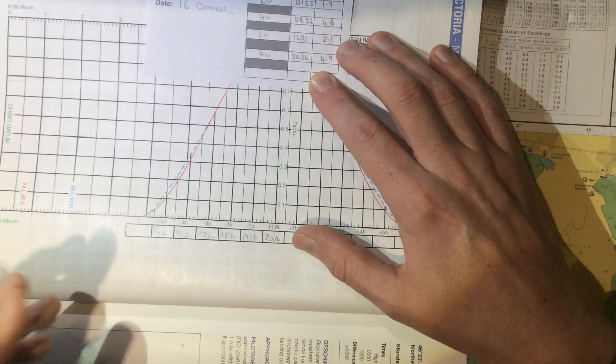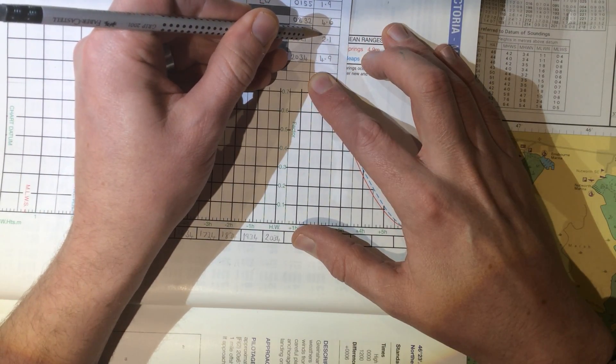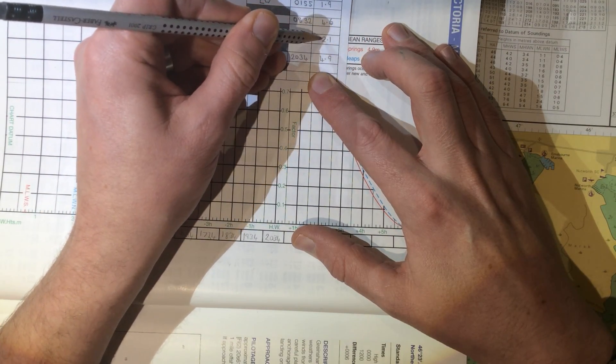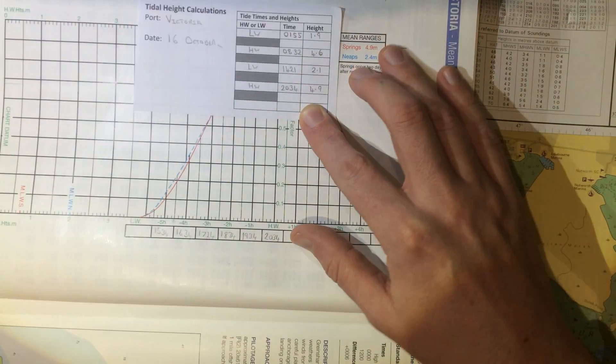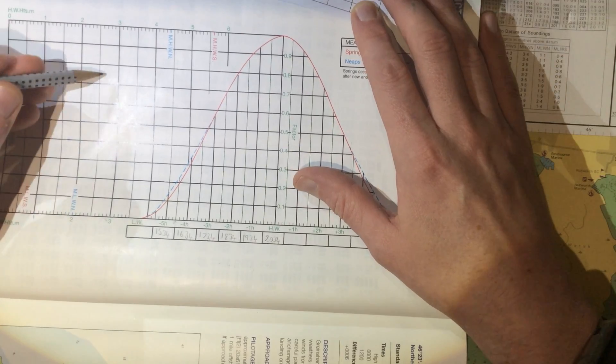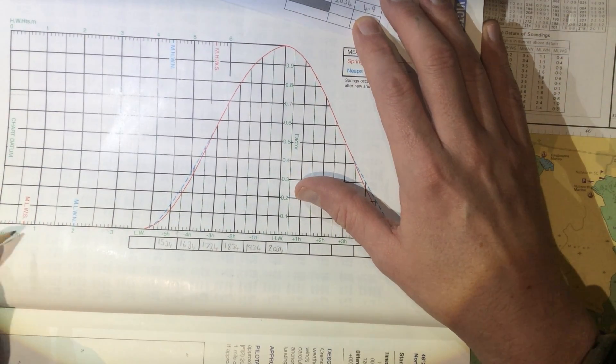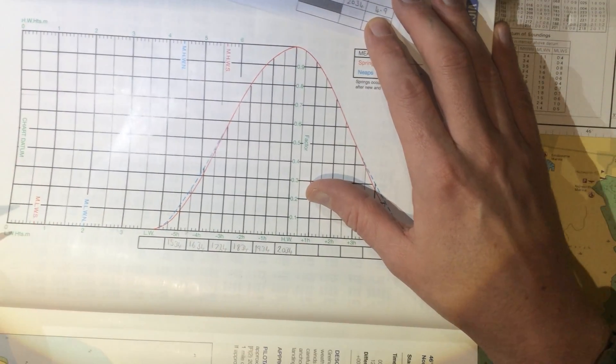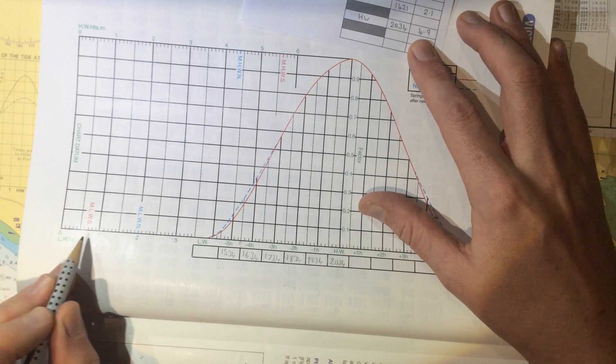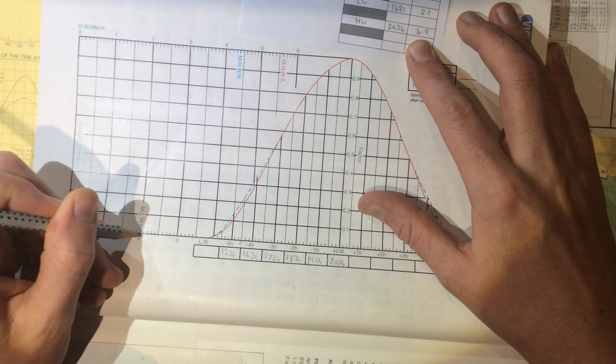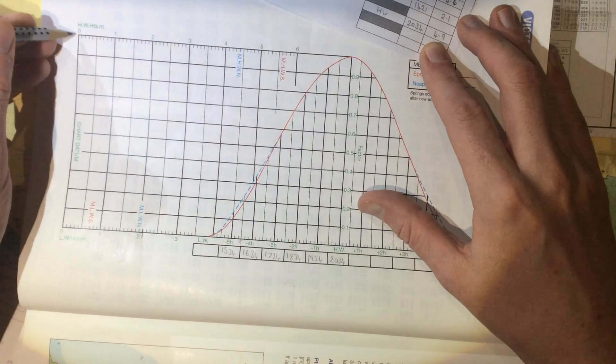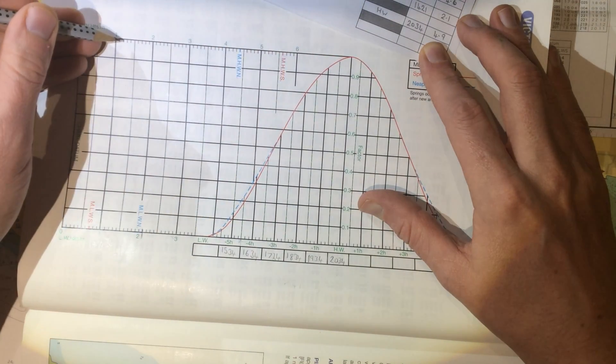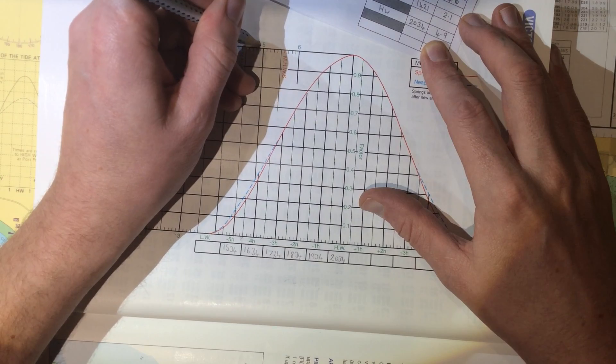Now between these two times you can see that the low tide was 2.1 metres and the high tide was 4.9 metres. We then come to this part of the table. Along this scale here, we mark the low water height. So the low water height was 2.1. We put a quick mark there. And the high water along this scale here, 4.9 is marked here.